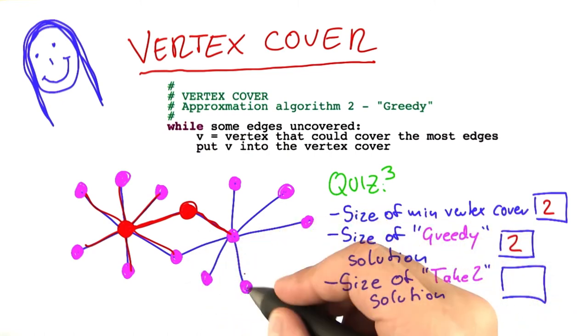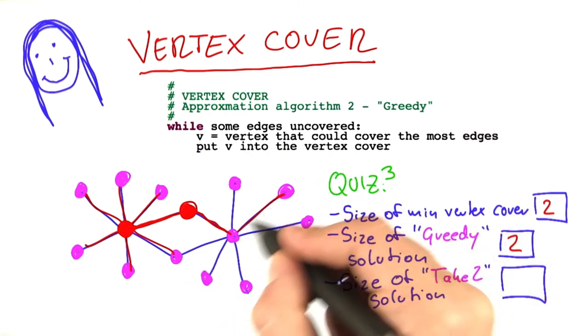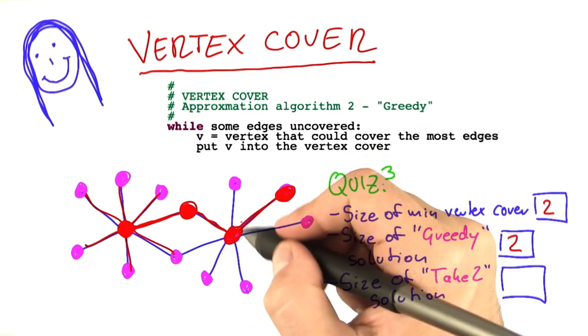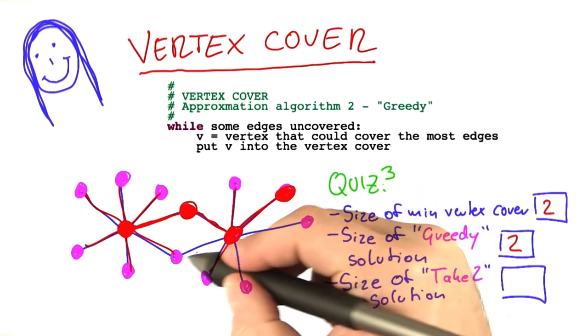It's not done yet, so it will have to choose another uncovered edge. Let's say it's that one here. And again, put two vertices into the solution set, and then all edges are covered.